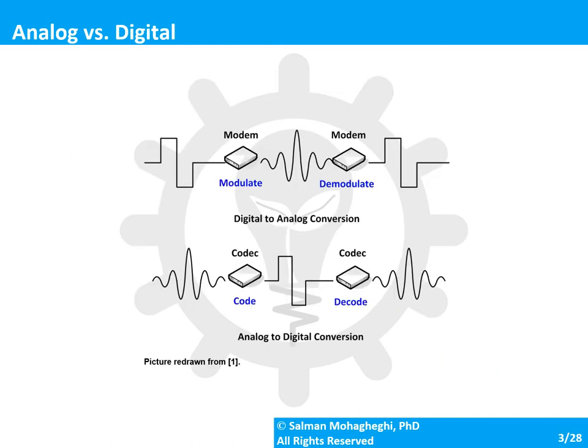You may be familiar with modems. Modem stands for modulate-demodulate — a device that takes digital data, converts it to analog, sends it as analog, and then demodulates it back to digital at the receiving end. The counterpart is a codec, which stands for code and decode. Here you have an analog signal, encode it as digital pulses, send it through a digital transmission network, and at the receiving end decode it back to its original analog form.